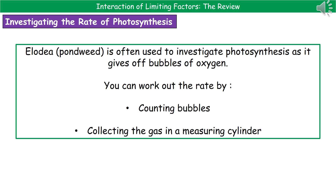The reason that we use this pondweed is because it's going to give off bubbles of oxygen that we can actually work out the rate by doing something with. Now, what we're going to do with these bubbles — you could do two different things. The first one is a really simple approach of just sitting there and counting the bubbles. It's a very exciting practical if you've done it, as you probably know.